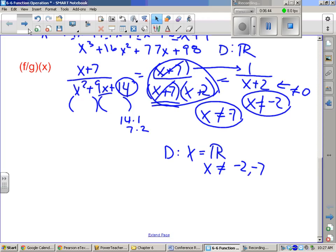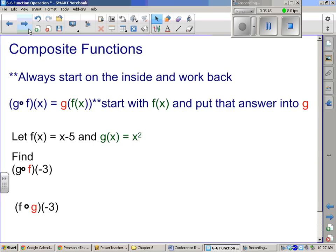Okay. Alright. Also, part of function operations are composite functions. And we got some hints up here. Always start on the inside and work back out. So this is not multiplication, and it's not goth. Goth. Backwards would be fog. Fog or goth. Maybe we're all in a fog when we're looking at these, but.